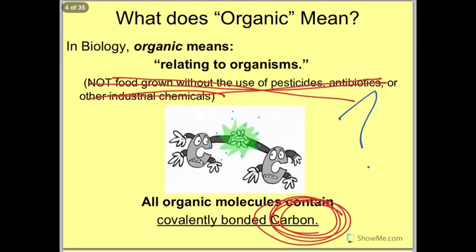Carbon, carbon, carbon. In biology class, think carbon. All organic molecules contain covalently bonded carbon. What's really cool about carbon is that carbon atoms can bond to other carbon atoms, which gives carbon the ability to form really long chains, almost unlimited in length. These carbon-carbon bonds can be either single, double, or triple, and the chains can be straight, branched, or even shaped in rings. So carbon is unique in that it can form millions of different large and complex structures.